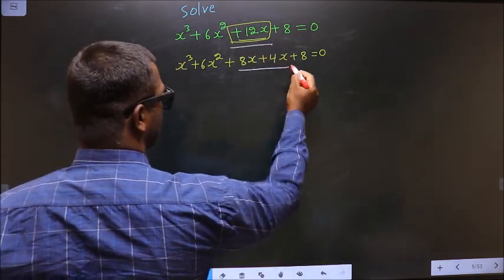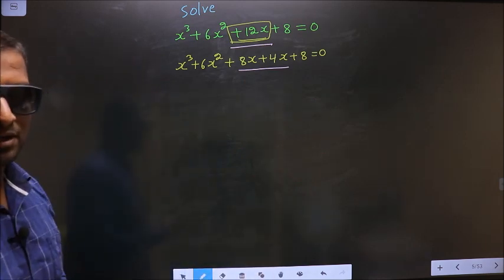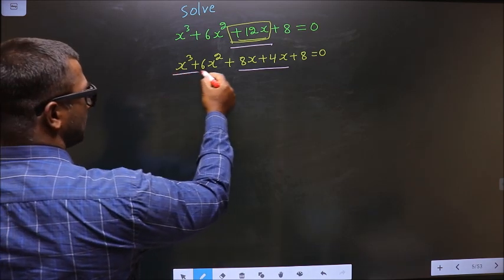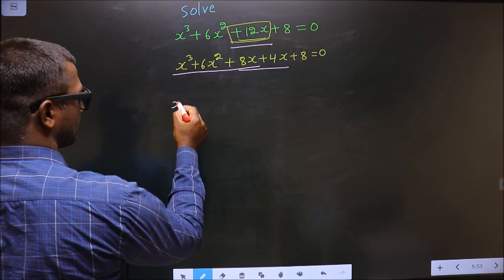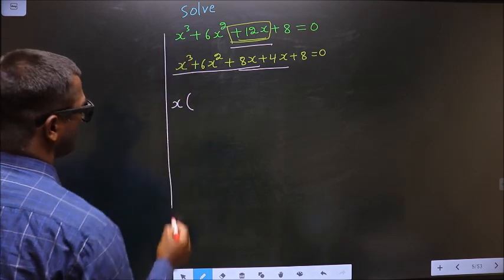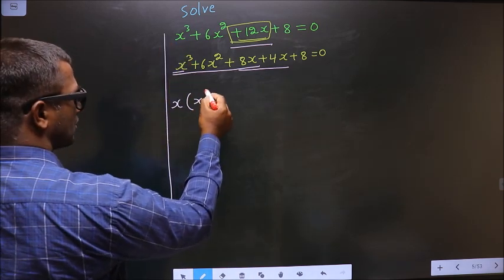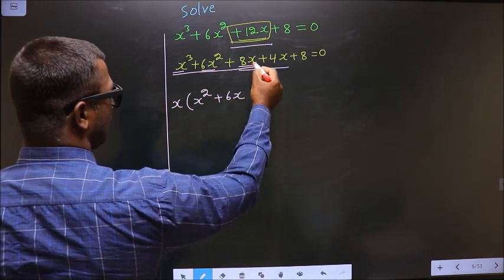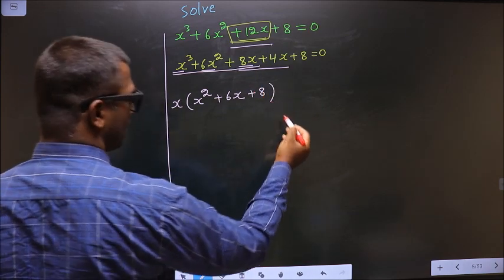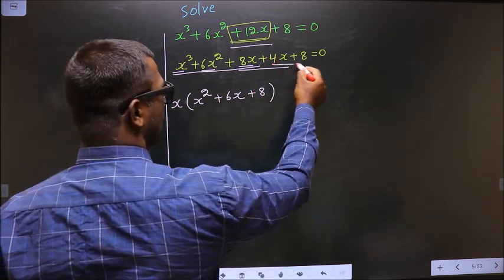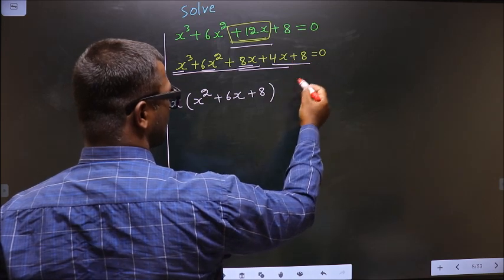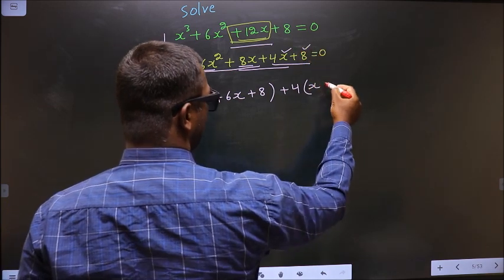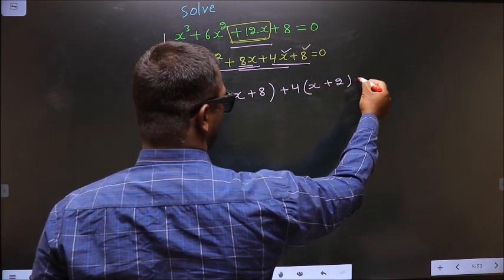In place of 12x, I have written this — this is step 1. What can you take out common from these 3 terms? It is x. So here you will be left with x square, and here 6x, and here plus 8. Same way, what can you take out common from these 2 terms? It is plus 4. So here you have x, and here you get plus 2, equal to 0.